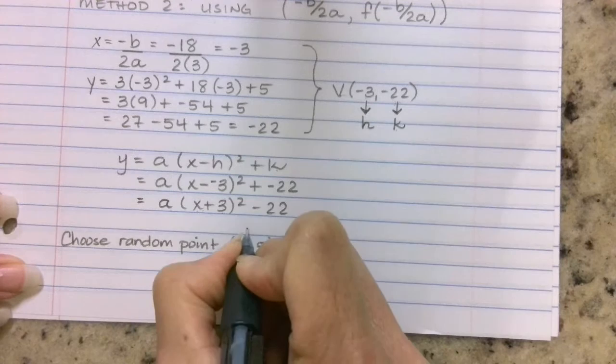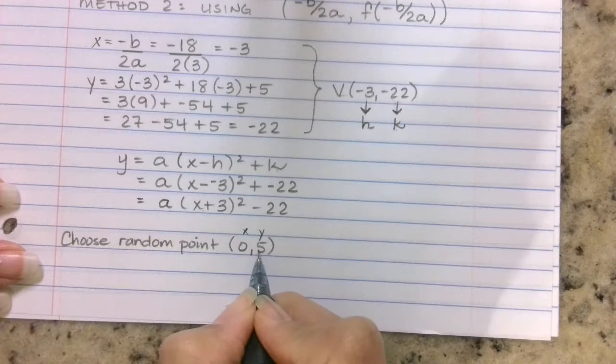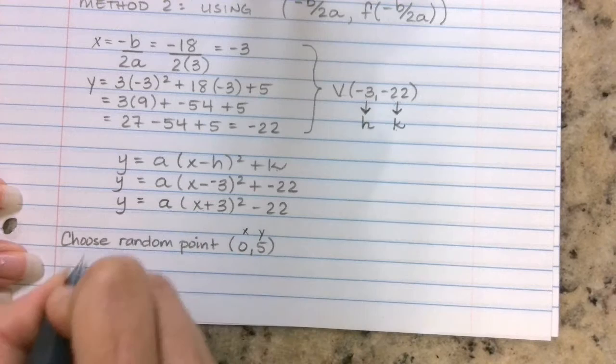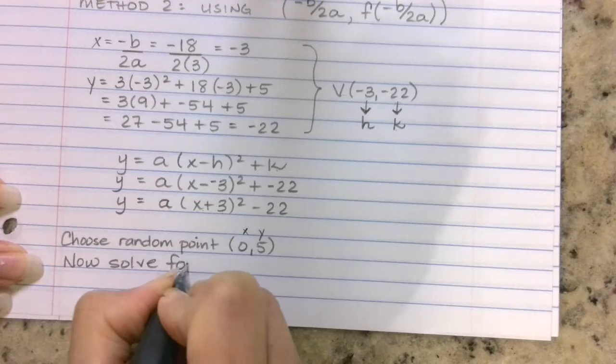So what am I going to do? Substitute that into my equation here. So I'm going to bring down this y here to make it more obvious. So y = a(x + 3)² - 22. I am solving for a.